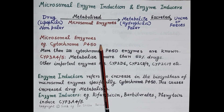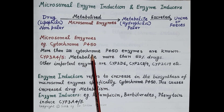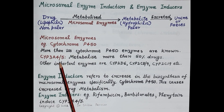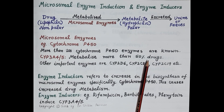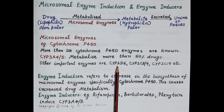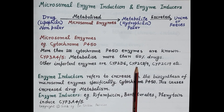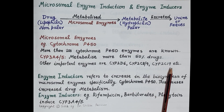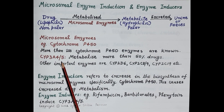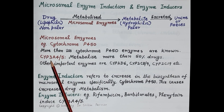These isoenzymes catalyze most of the oxidations, reductions, hydrolysis, and glucuronoid conjugation reactions, and more than a hundred cytochrome P450 enzymes are known. Two cytochrome enzymes, namely cytochrome 3A4 and cytochrome 3A5, metabolize more than 50 percent of drugs. Other important enzymes are cytochrome 2D6, cytochrome 2C8, cytochrome 2C9, and cytochrome 2C19.